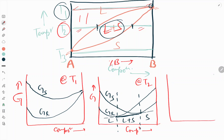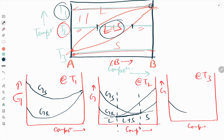At T3, the G versus composition diagram shows that solid is stable over the entire composition range. The solid curve sits at minimum free energy since it is the stable phase with lower Gibbs free energy. There is a small gap for the terminal solid solution region on one side and a larger gap on the other side. The liquid curve sits higher, as liquid is unstable at T3.